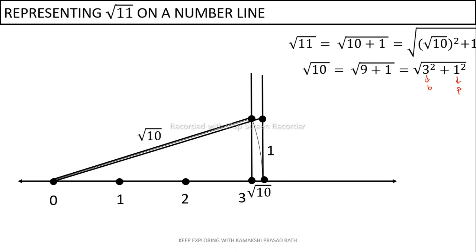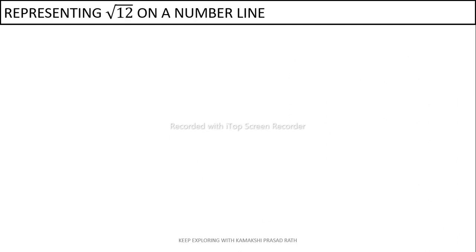After getting root 10, we construct one more perpendicular of 1 unit upon it. Root 10 upon 1 unit gives root 11, which is again plotted on the number line. So there are two ways to construct root 11 — either building from root 10, or using other combinations — since there are many valid methods.